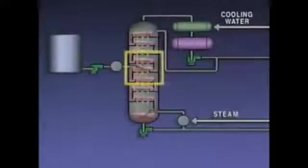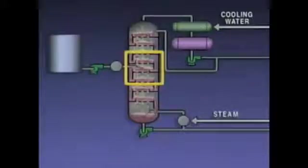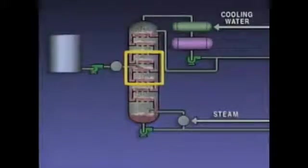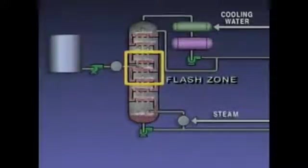Not every distillation tower is designed in the exact same way. However, every tower can be divided into three basic sections. The middle section is where the feed enters the tower and part of the feed vaporizes. This vaporization is commonly known as flashing, so this section of the tower is often called the flash zone.